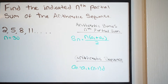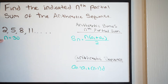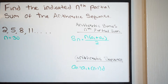They want us to find the nth partial sum of the arithmetic sequence. Here's our sequence — they're telling us that it's arithmetic — and they give us n equals 30. That's the term we're going to go up to when calculating the partial sum. What we want to do is find the sum of all the terms in this arithmetic sequence going up to the 30th term.